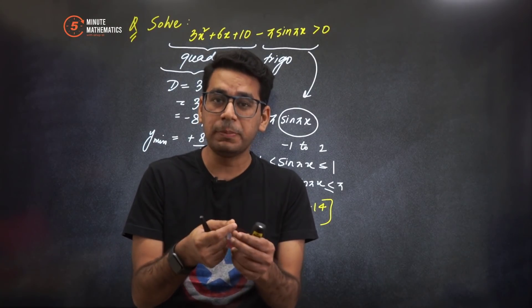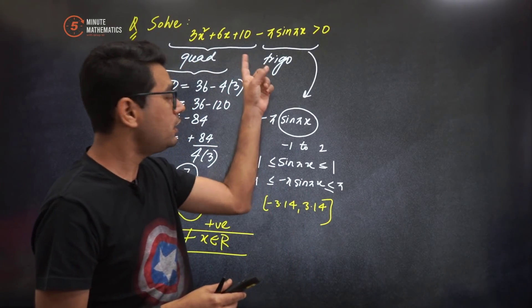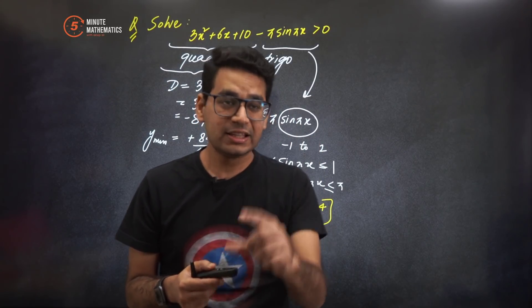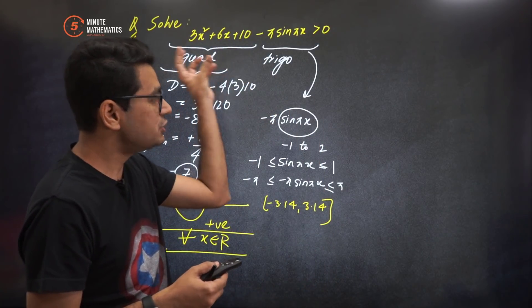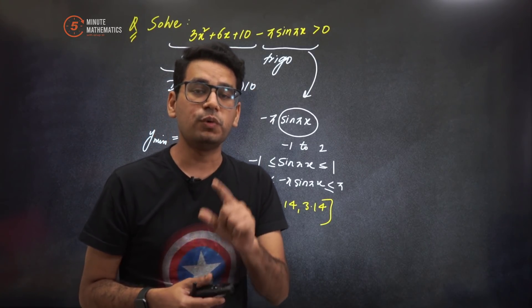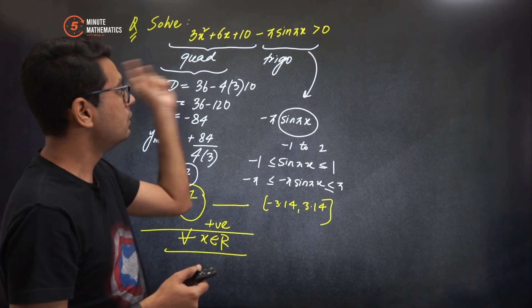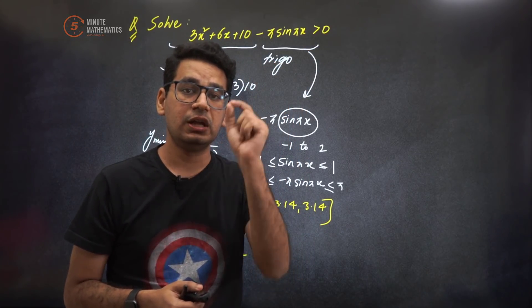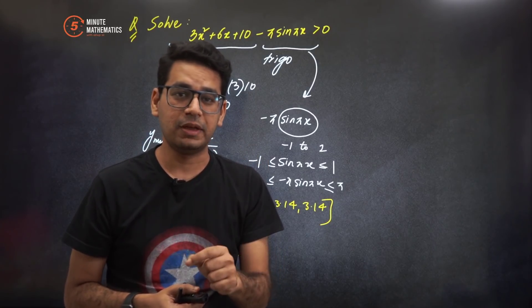So now you have to understand: whenever you see quadratic in terms of inequalities, that means you should think there's some game with d. Clear guys? I hope you have learnt the art of d less than 0 in this quick 5 minute video.